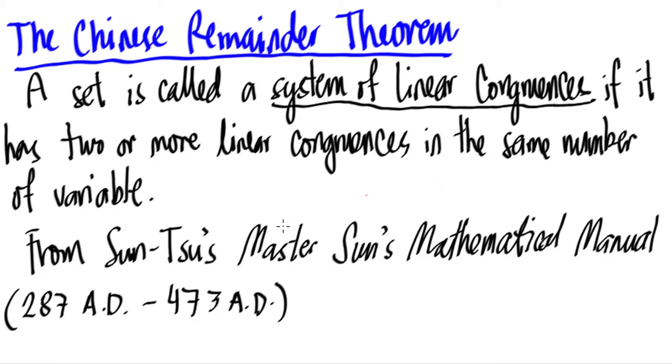Now it's our turn to solve a set of two or more linear congruences in the same number of variables. Such a set is what we call a system of linear congruences, if it has two or more linear congruences in the same number of variable.